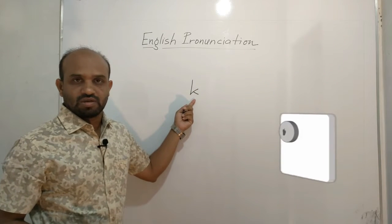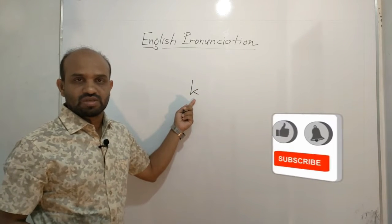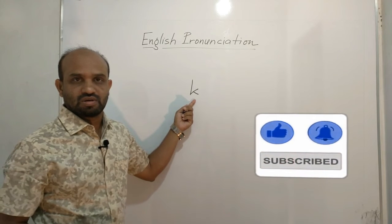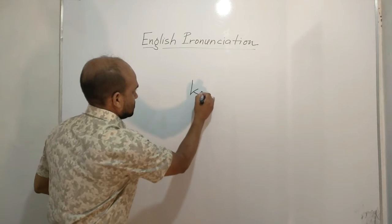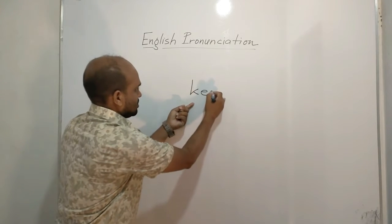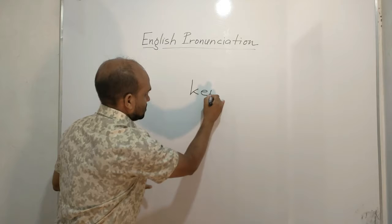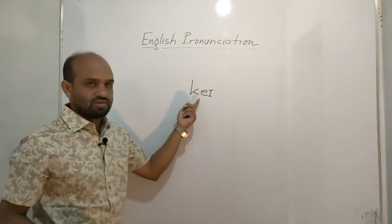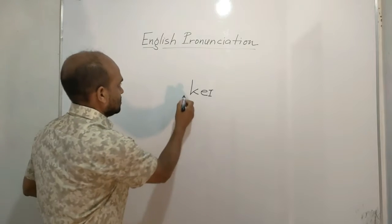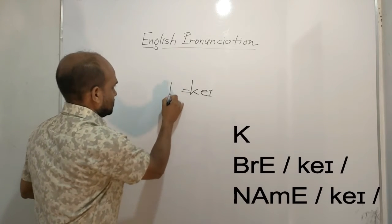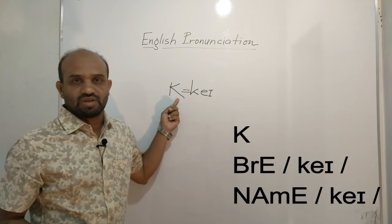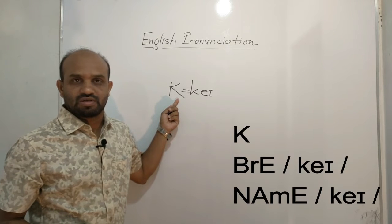This is the pronunciation symbol that makes the sound 'kha'. Now it is K — the sound of the 11th letter of the English alphabet, K.